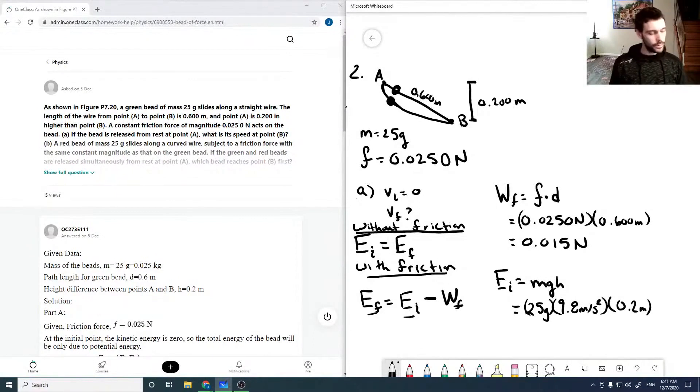So that would be 25 grams times 9.8 meters per second squared times 0.2 meters. And then multiplying by 1 kilogram per thousand grams to cancel the grams and give us a value in kilograms, meters squared per second squared, which is a joule. So running through all these values, we get 0.049 joules.